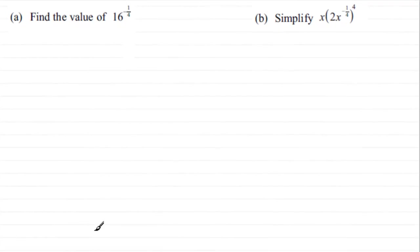Now we got a couple of examples here on indices to do. For the first one we've got to find the value of 16 to the power minus a quarter. Maybe it's not too clear here but that's 16 to the power minus a quarter. So how are we going to work this out?